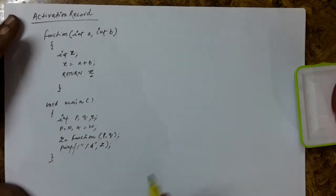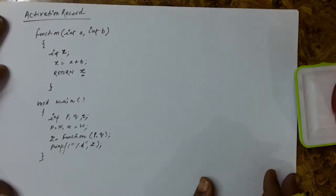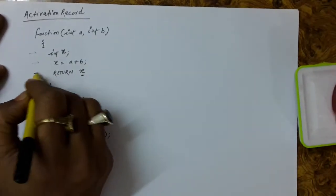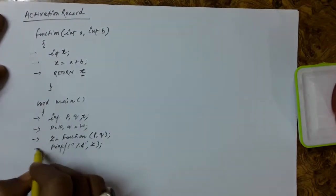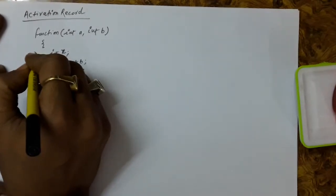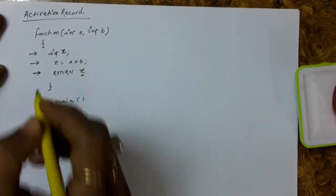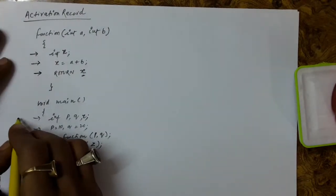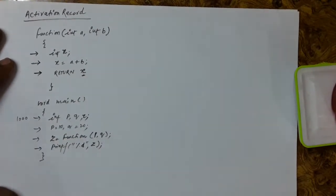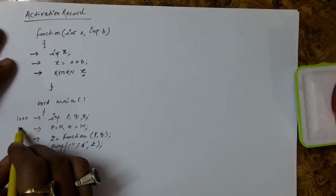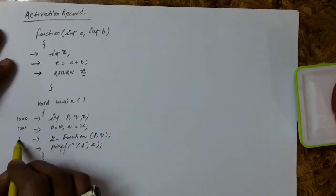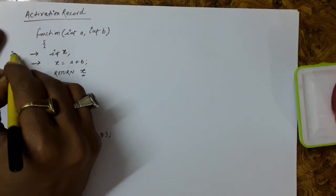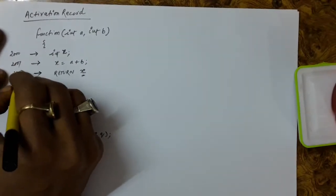What are the contents of that activation record, or how is that activation record helping us? Suppose this is a program — these are the instructions, and all these instructions are going to be stored in the RAM. The address at which the first instruction goes is 1000, the next at 1001, then 1002, and then 1003. Similarly, the function's instructions are going at some 2000, 2001, and 2002 locations.